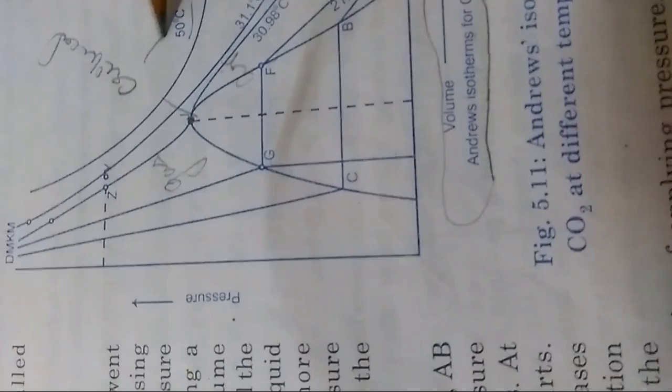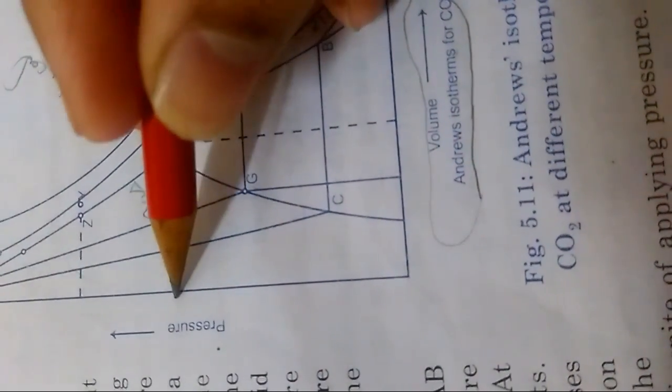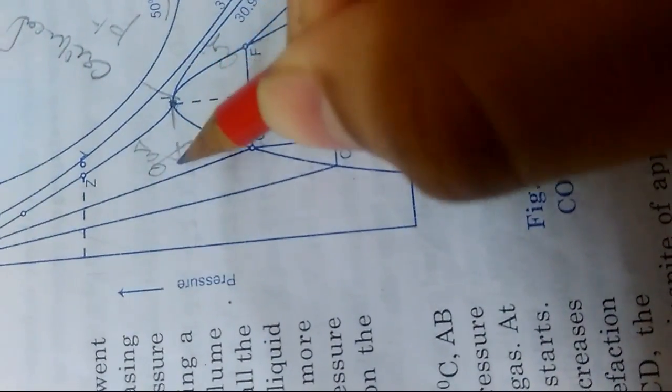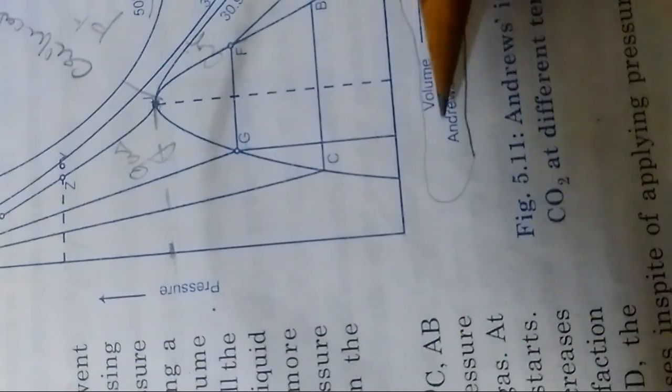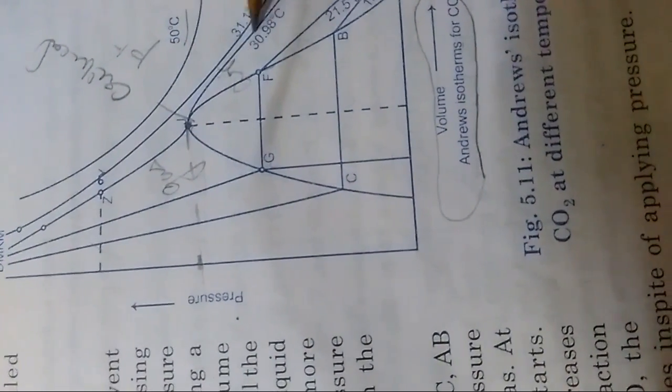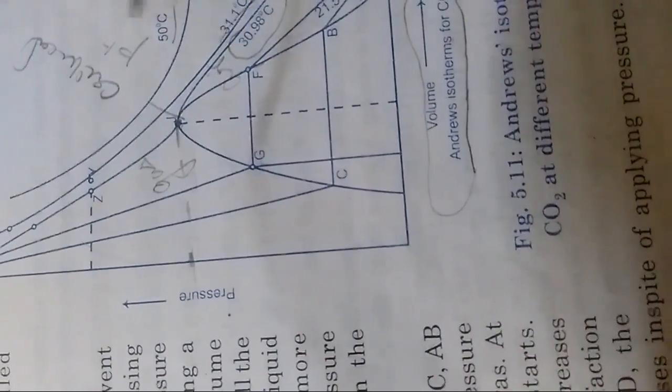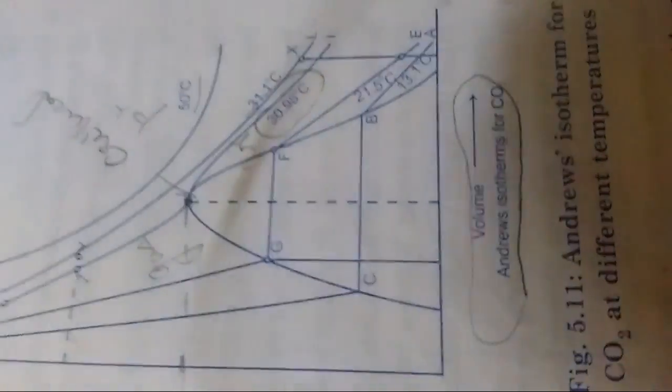I mentioned this previously. It's called the critical point. The pressure corresponding to this point is called critical pressure, this volume is called critical volume, and this experiment is performed at 30.98 degrees, so the critical temperature is 30.98.